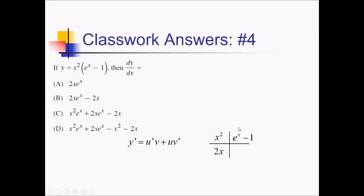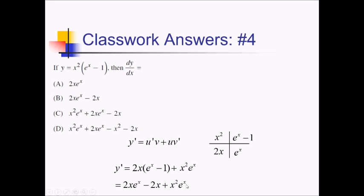The derivative of x squared is 2x. The derivative of e to the x minus 1 is just e to the x — that 1 gets differentiated away. Multiplying out with the ribbon: 2x times (e to the x minus 1), plus x squared times e to the x. Distributing the 2x gives me 2x e to the x minus 2x plus x squared e to the x. The only answer choice with three terms is choice C.